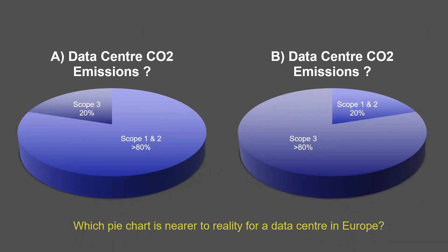Let's look at data centres. I've got two pie charts. On the left I've got A, showing scope three as 20%. On the right I've got B, with scope three accounting for more than 80%. The question I'd like to ask is: which pie chart is nearer to reality for a data centre in Europe? There are very few people that can answer this, because basically people are not measuring these carbon footprints holistically.